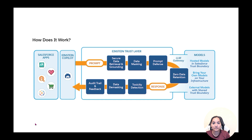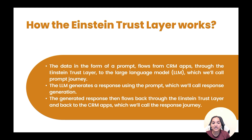Now let's look at the definitions. The data in the form of a prompt flows from CRM apps through the Einstein Trust Layer to the large language model — that is the prompt journey. The path of the prompt before it reaches the large language model goes through certain steps in the trust layer. The large language model generates a response using the prompt — that is response generation. This generated response then flows back through the Einstein Trust Layer to the CRM apps — that is the response journey.